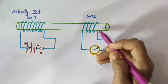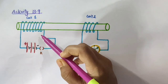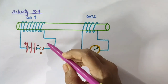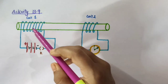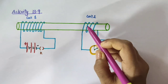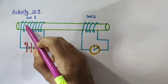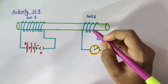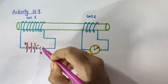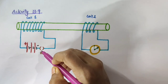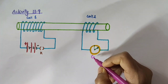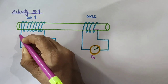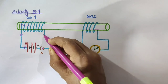Now let us discuss about activity 13.9. In this activity we have a coil of wire connected to a galvanometer, and the moving magnet is replaced by a current-carrying coil whose current can be varied. We take two different coils of copper wire having a large number of turns — coil 1 and coil 2 — both inserted over a non-conducting cylindrical rod. Coil 1 has 100 turns and coil 2 has 50 turns. Coil 1 is connected in series with a battery and a plug key, and coil 2 is connected to a galvanometer. When we plug in the key connected to coil 1, some current flows through it.